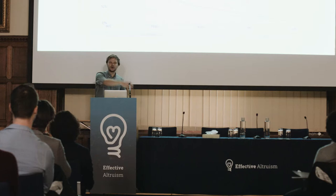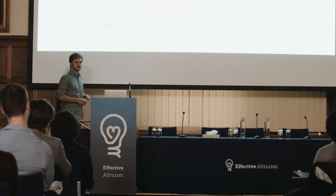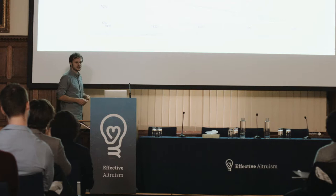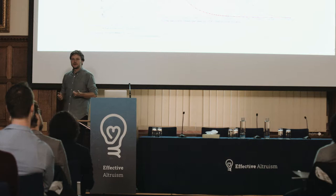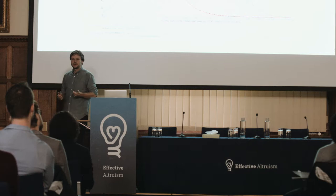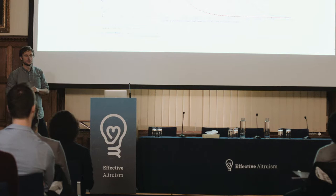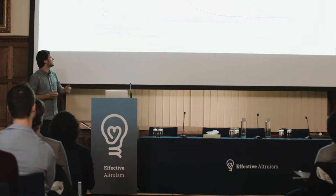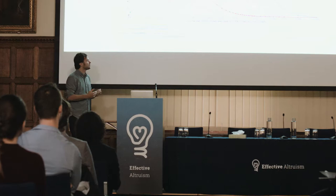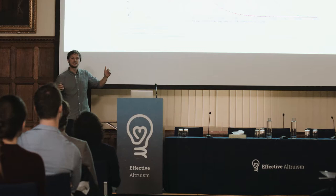Only if you add these hundred years to the big picture do you see that the same misery we still unfortunately see in many parts of the world today was just outside the door a couple of generations ago. This very rapid increase of prosperity in the Western world led to a tremendous increase in global inequality. This chart shows the income distribution of the world, with reconstructions for 1800 and 1970 in blue. In 1820 inequality was low, and the prosperity level was also low — most people lived in extreme poverty.